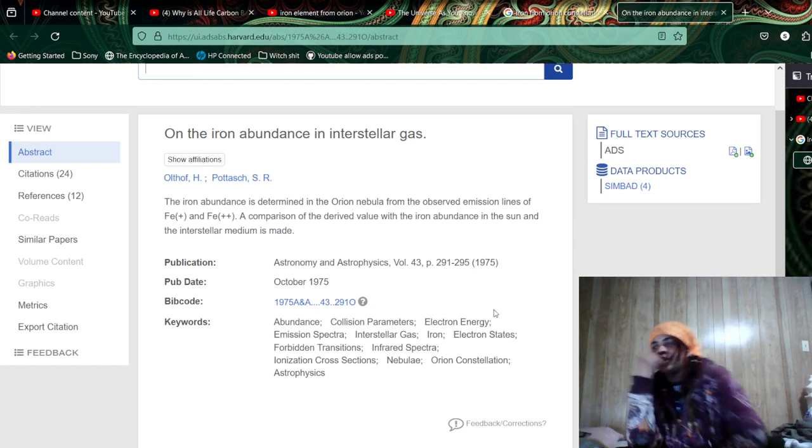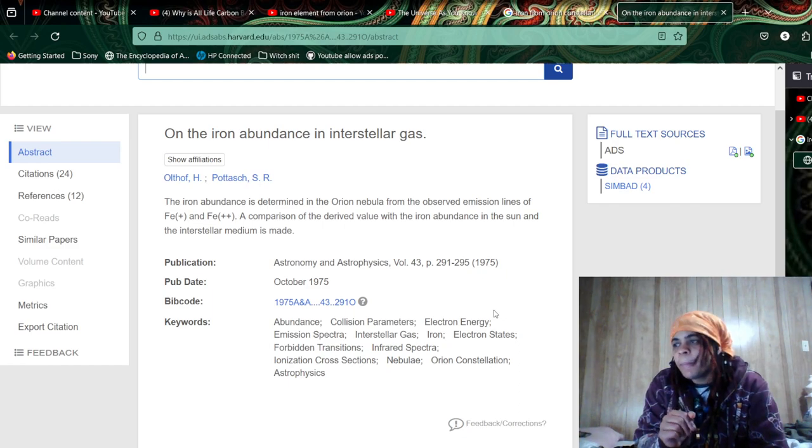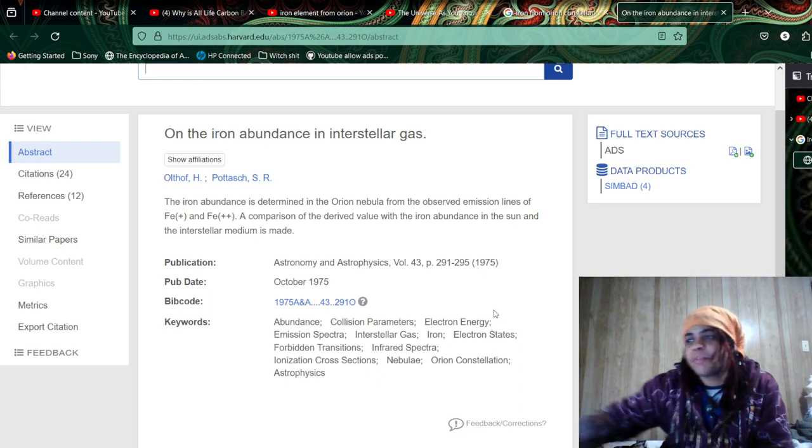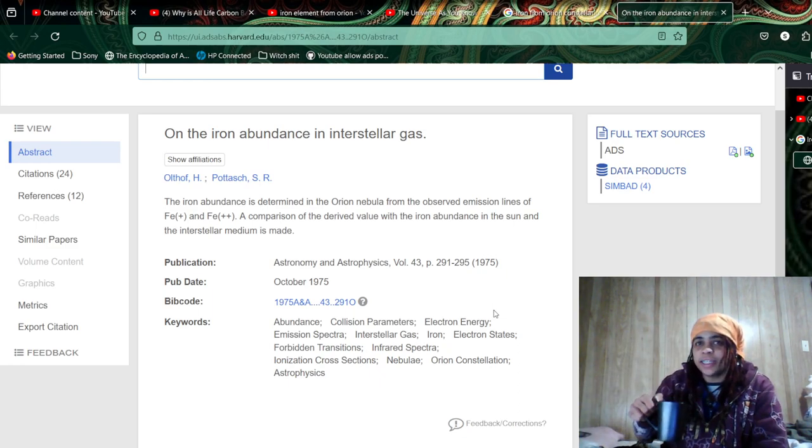The iron abundance is determined in the Orion Nebula from the observed emission lines of the Iron Plus and Iron Double Plus. A comparison of the derived value with the iron abundance in the sun and the interstellar medium is made. Published date, October 1975.